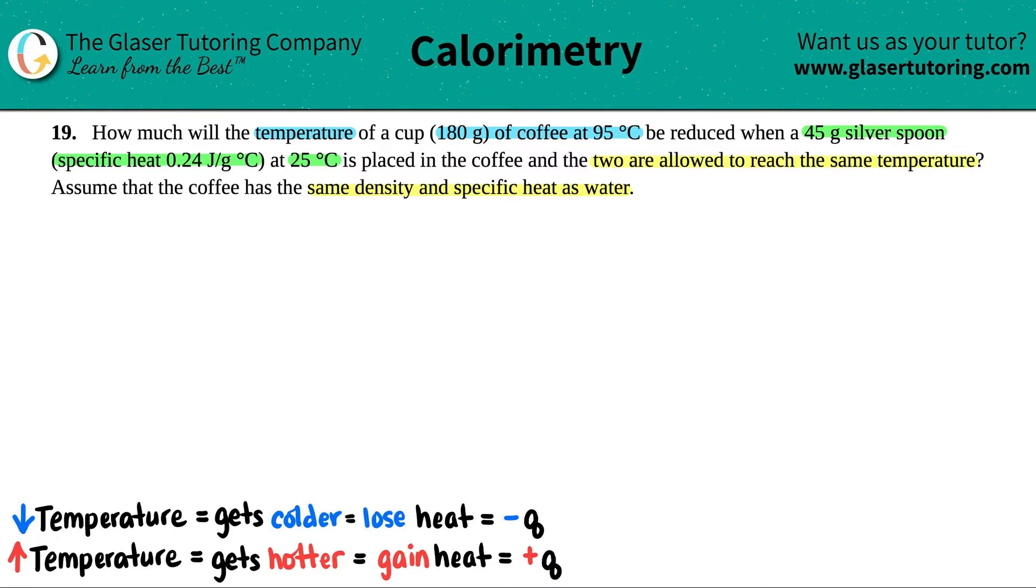When you see that you have two different substances, in this case, we have coffee and the silver, the silver spoon, we think of this formula for heat transfer. Now, what I'm going to do is I'm going to put this over here, because I'm going to do a little chart on this hand side.